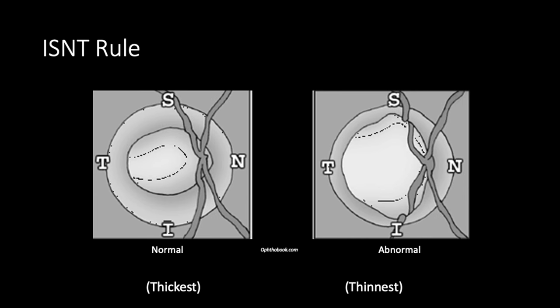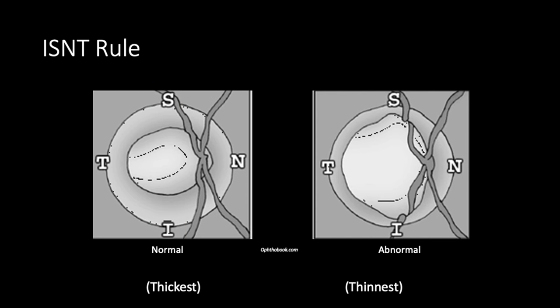The ISN'T rule is another objective manner of assessing abnormal cupping of the optic disc. It represents the thickness of the optic nerve quadrants in decreasing order: inferior, superior, nasal, temporal. The inferior aspect of the neural retinal rim should be the thickest, decreasing progressively through each quadrant. Any violation of the ISN'T rule should raise your suspicion of glaucomatous disc changes.